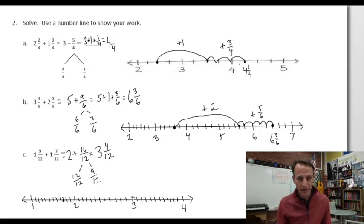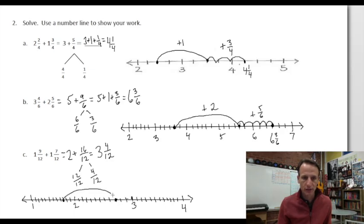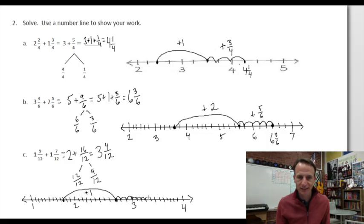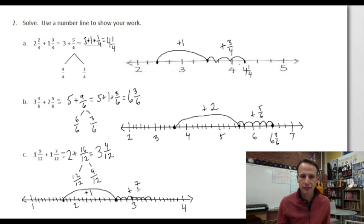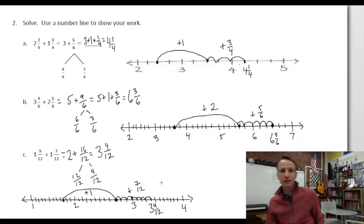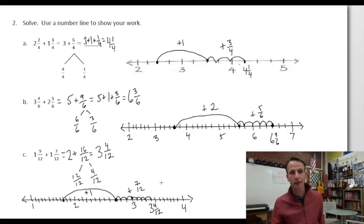We're going to add one whole, so we find two and nine-twelfths — there's twelve, eleven, ten, nine. So the first hop is the one whole: plus one. Then we go another seven-twelfths: one, two, three, four, five, six, seven. That's plus seven-twelfths. And sure enough, that takes us to three and four-twelfths, right where we expected.